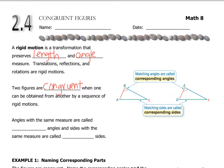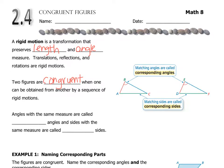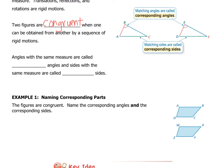Some people say congruent because they just emphasize a different syllable. Angles with the same measure are called congruent angles, and sides with the same measure are called congruent sides.